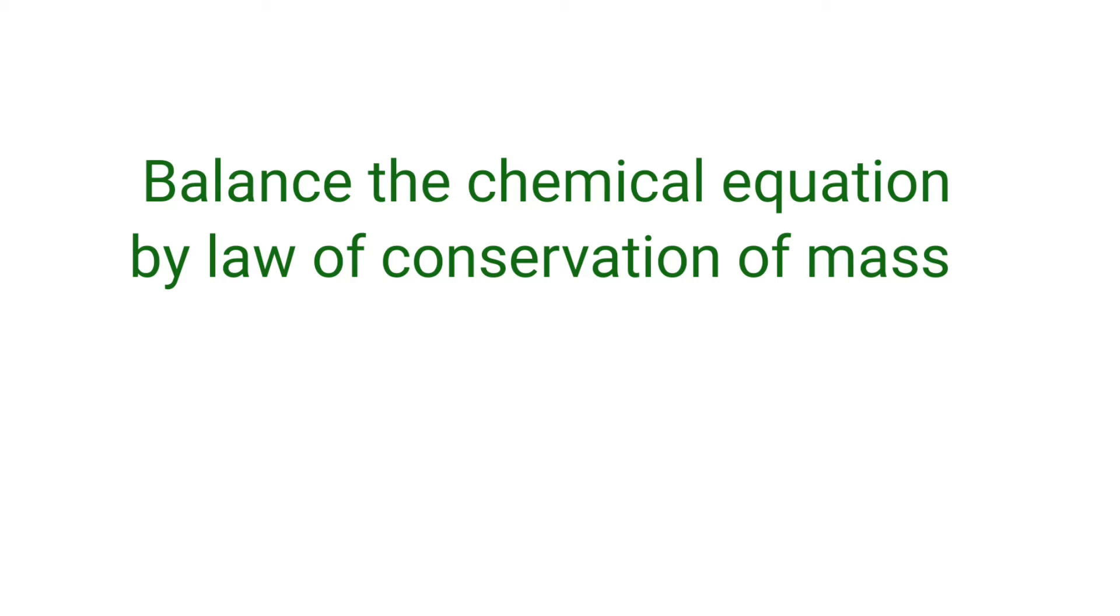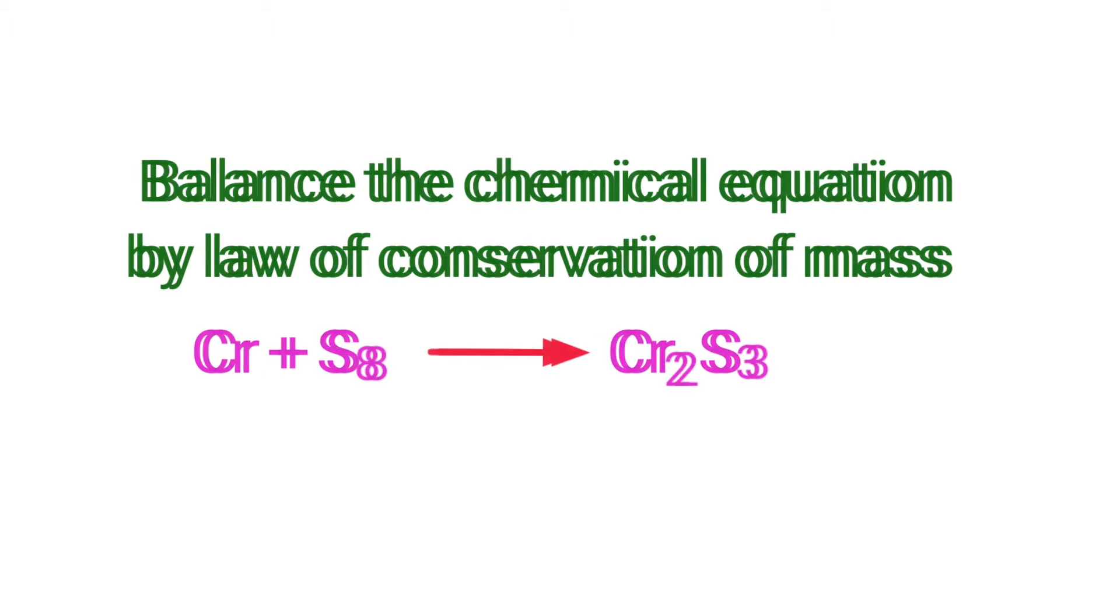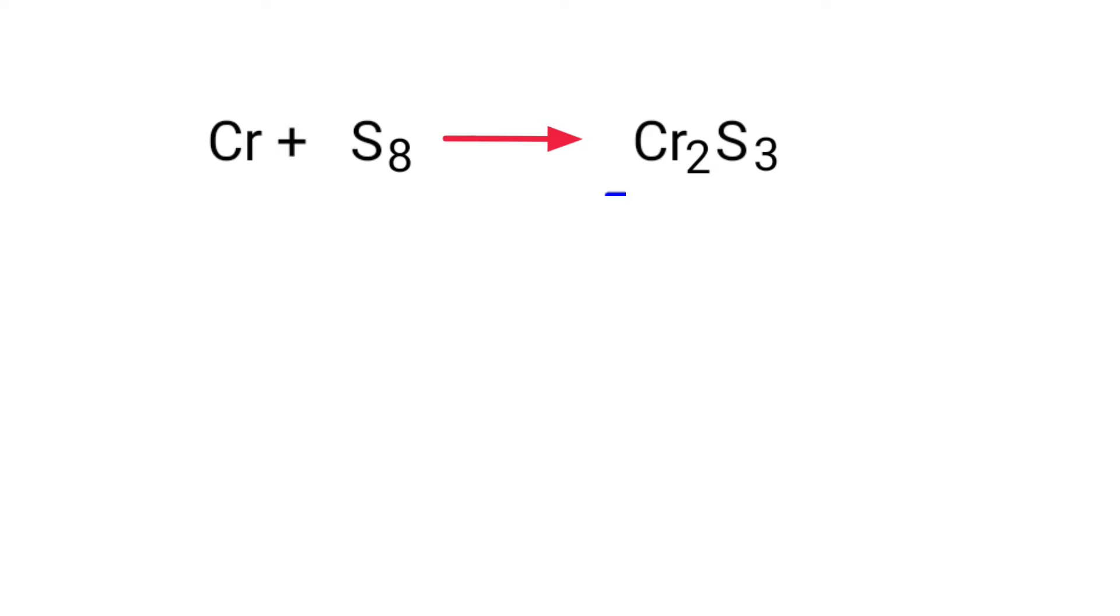Balance the chemical equation by law of conservation of mass. Chromium plus cyclooctasulfur gives us chromium sulfide. In this equation, the reactants are chromium and cyclooctasulfur, and the product is chromium sulfide.